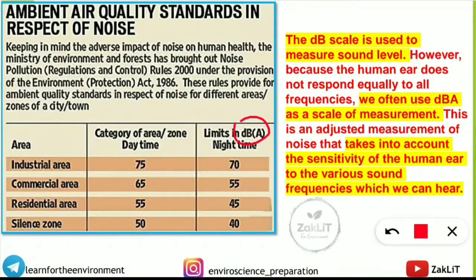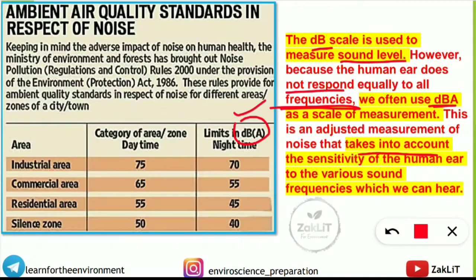In the noise standards table, the unit is dB(A) — decibel A. Why is 'A' mentioned? Because the human ear does not respond equally to all frequencies, we use dB(A) as a scale of measurement. This is an adjusted measurement of noise that takes into account the sensitivity of the human ear to various sound frequencies. So the limit is expressed in dB(A), not simply decibels.